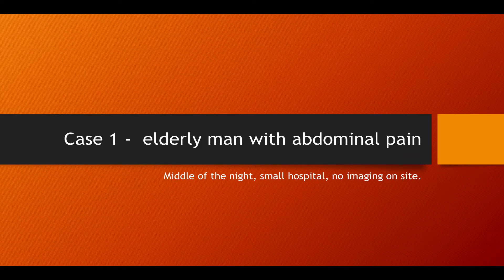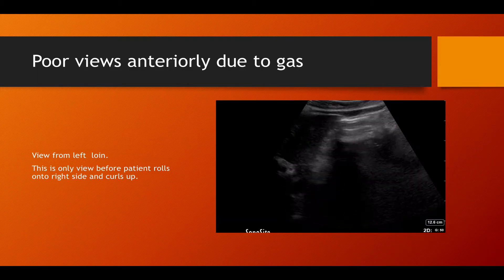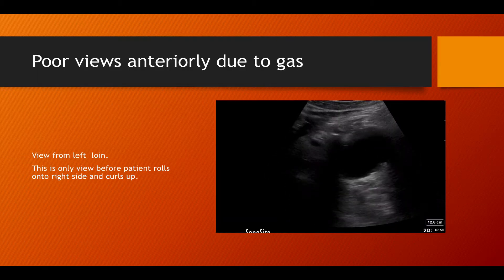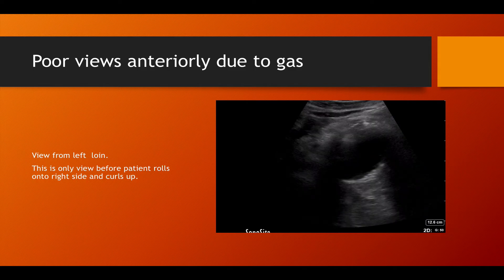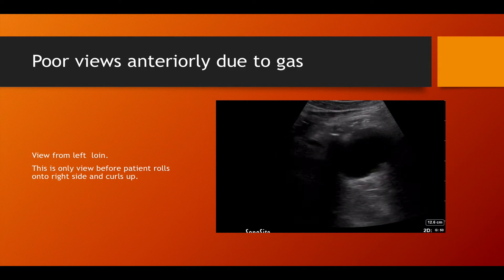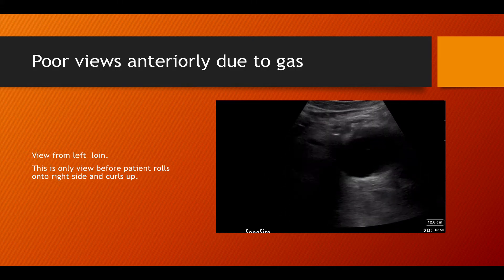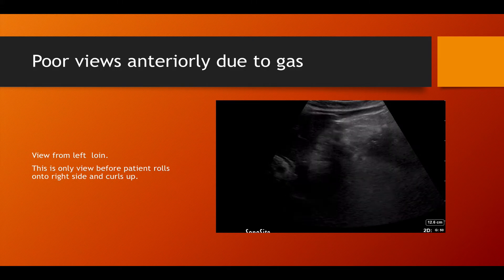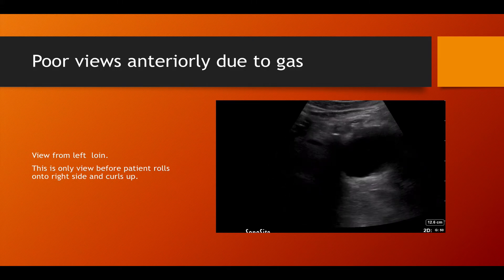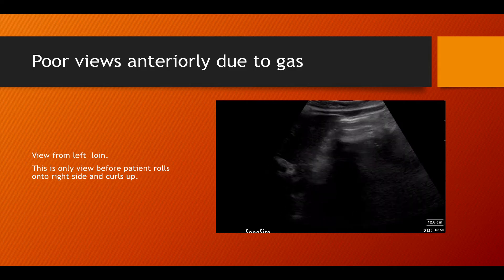The first case is an elderly man with abdominal pain. It's the middle of the night, a small hospital, and there's no formal imaging available — this is the only view you get. The patient is very distressed, not holding still, curling up on the right side, and all we have is this one view from the left. The question is: can you make a call on this? Is this a AAA?